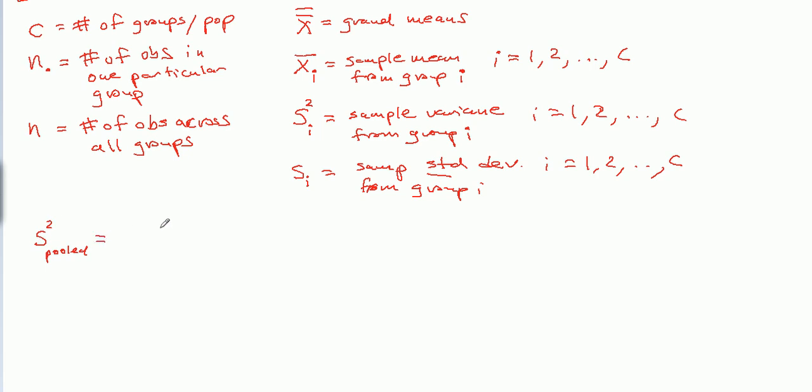So what this does is it takes these guys and pools them into one number. Because there are C of these, and I want one value, I'm going to sum them. So I'm going to go from 1 to C, I'm going to take each of these guys, add them up, and then once I have all that, I'm going to divide by C. Because there's C of them. So you could think of this as the average of the variances, of the individual group variances.